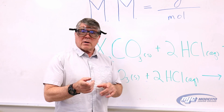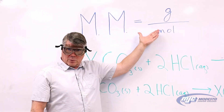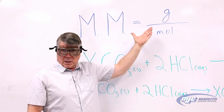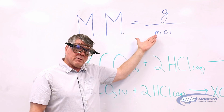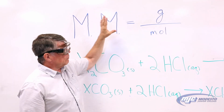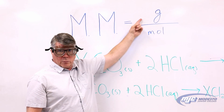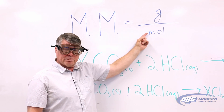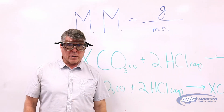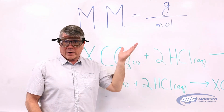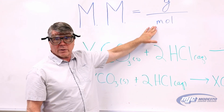Let's talk about molar mass. Molar mass is grams per mole — it's how many grams we have in a mole of that compound. So in order to determine the molar mass, we need two numbers: we need to know how much it weighs and how many moles we have. The top part's easy — we're going to weigh our unknown carbonate and that gives us the grams. All the rest of the experiment is to get the moles.